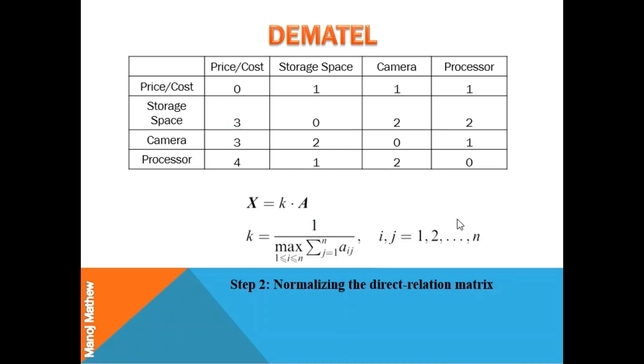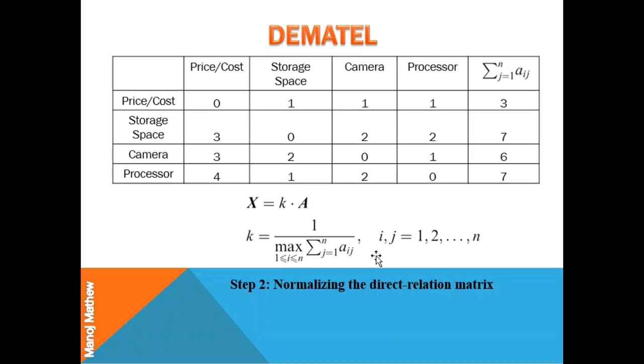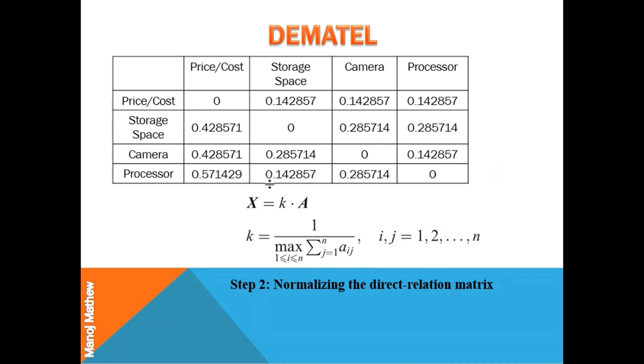Next, we normalize the above direct relation matrix using this formula. The summation part of the formula is shown here. We just add all the values in the row to get these values. Next, we find the maximum value in the summation column. You can see that 7 is the maximum value. So we divide the values of the direct relation matrix with 7. On solving, we will get the normalized direct relation matrix which is represented by x.